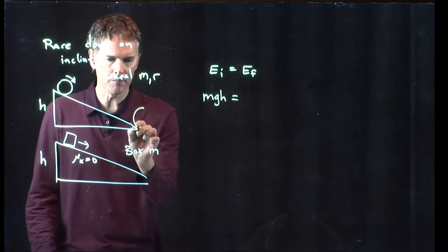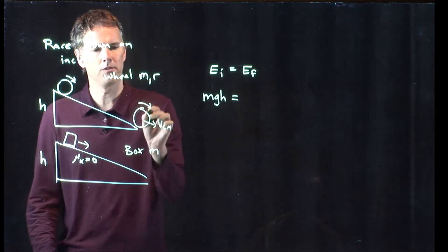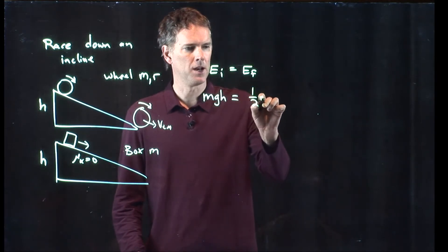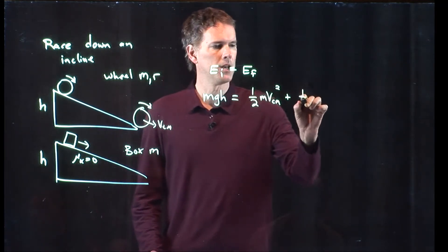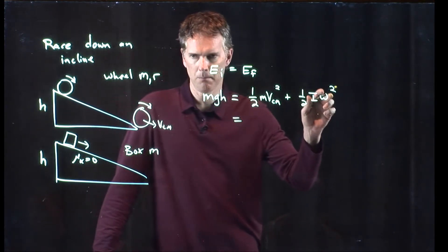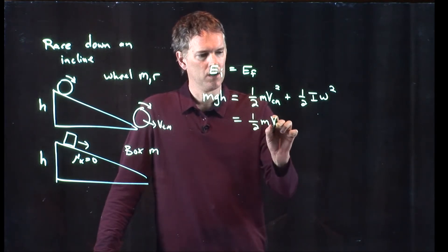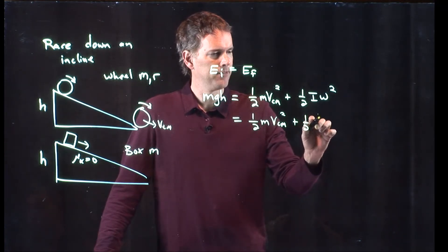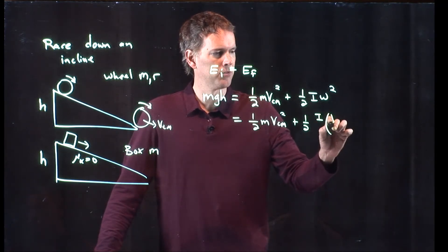When it's at the bottom, it has center of mass motion and it has rotational motion. We have to add those two up: one-half m vcm squared plus one-half I omega squared. But there's a relationship between vcm and omega if it's pure rolling, so we can put these terms together. We get one-half m vcm squared plus one-half I over r squared, which comes from this right here.